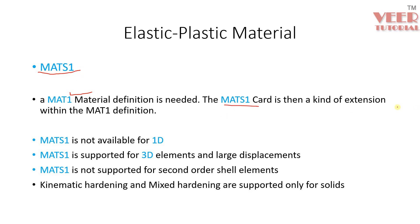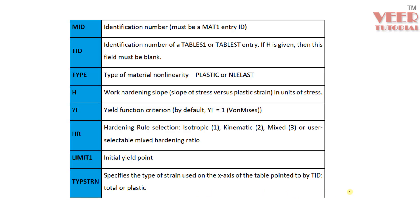The MATTE S1 card is basically an extension of MATTE1. The MATTE S1 card is not supported for 1D elements and not supported for second-order shell elements. Kinematic hardening and mixed hardening are only supported for solids. When you define properties for the MATTE S1 card, first define a MATTE1 card, then it will show a Table ID where you define the stress-strain curve. You can also define the work hardening slope, yield function, hardening rule, limits, and type of strain.